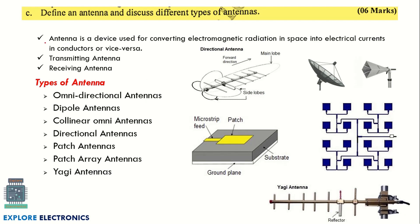The next question asks you to define an antenna and discuss different types of antennas. An antenna is a device that converts electromagnetic radiation in space to electrical currents in conductors, or vice versa — used for both transmitting and receiving. This carries six marks: one mark for the definition and five marks for the types. Choose three to four antenna types and briefly explain each with a relevant diagram.